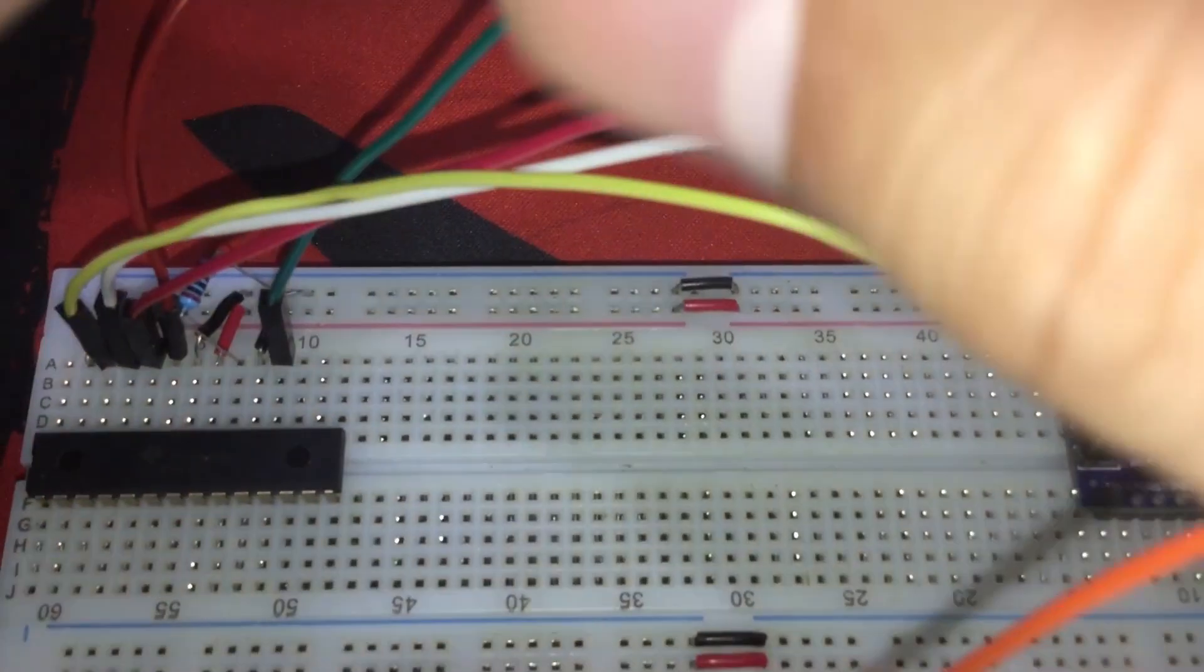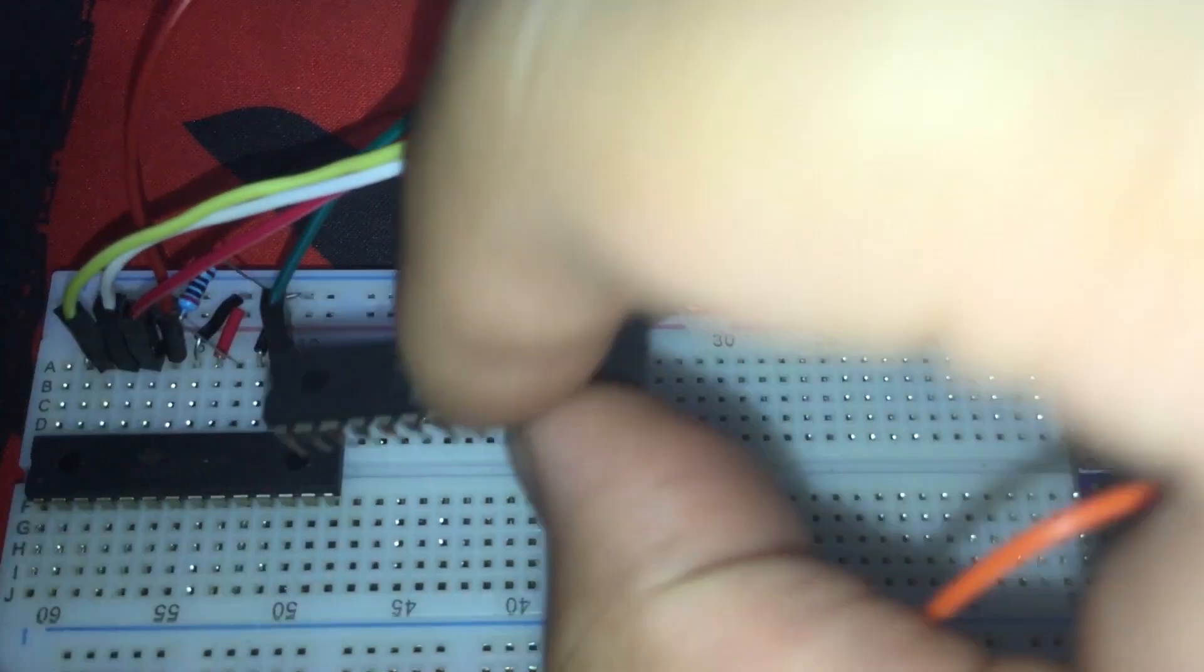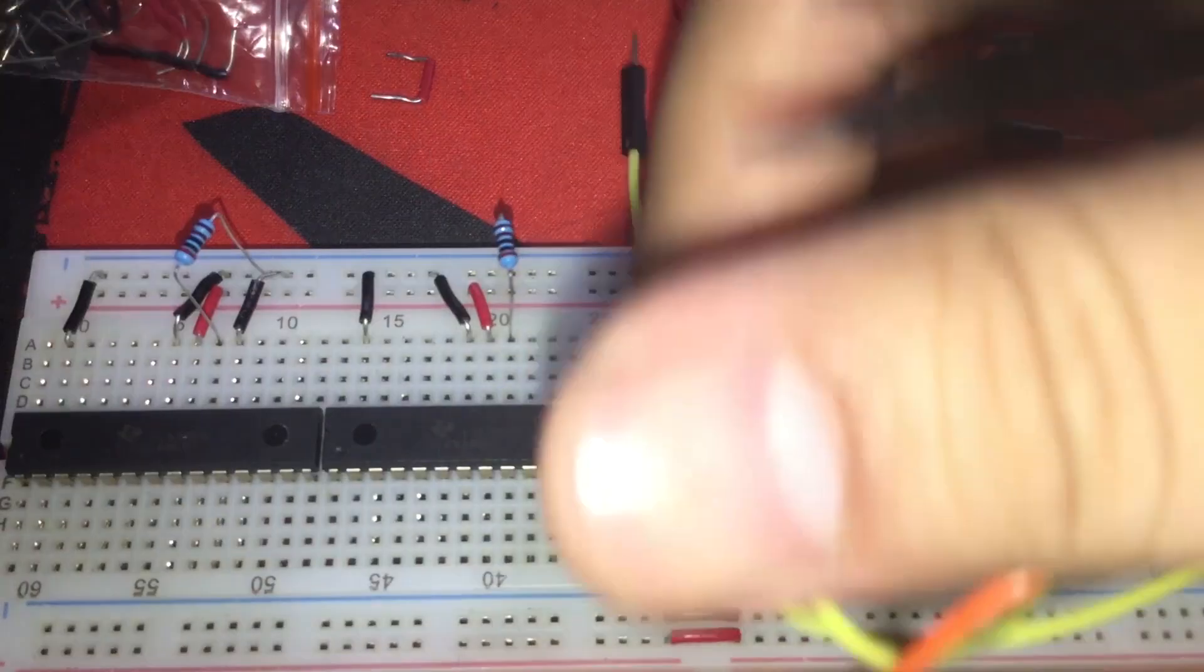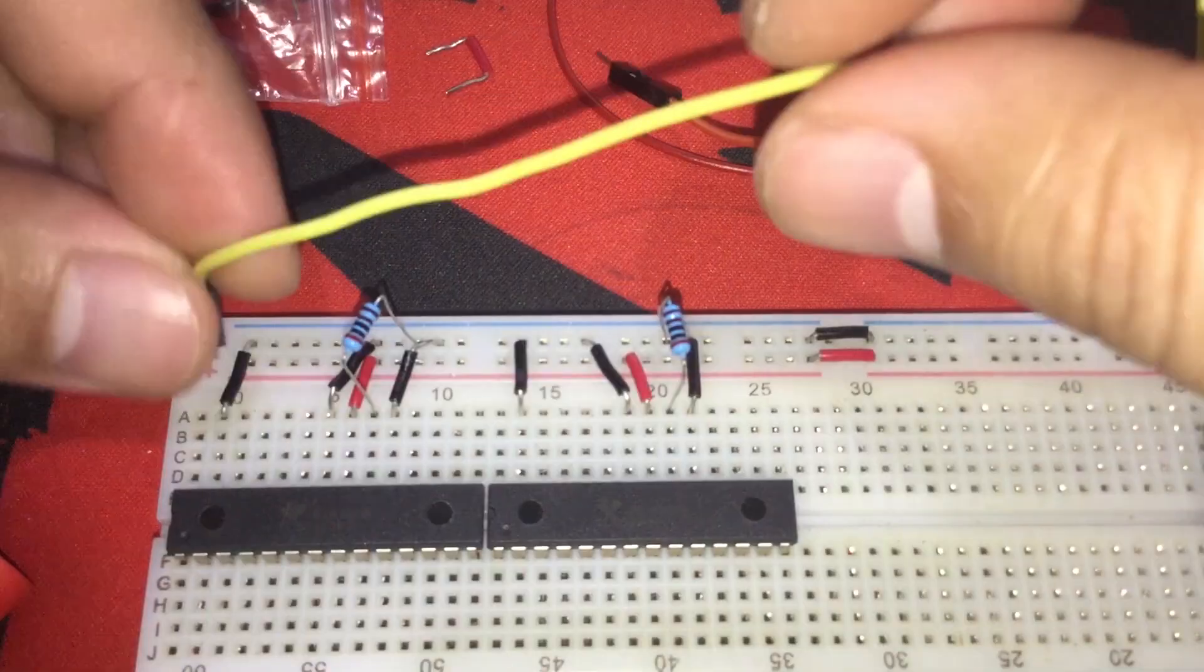So, first, let's connect the second IC to the power lines of the breadboard. Basically, just copy the connections of the first IC.